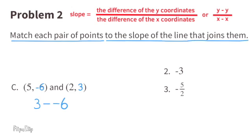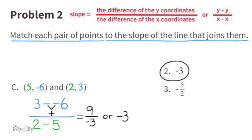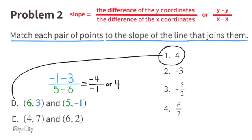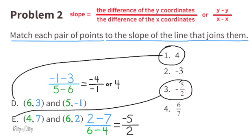C: 3 minus negative 6, which would be positive, over 2 minus 5. 3 plus 6 is 9, and 2 minus 5 is negative 3. Since 9 divided by negative 3 equals negative 3, the slope of this line equals negative 3. D: Negative 1 minus 3 over 5 minus 6. Negative 1 minus 3 equals negative 4, and 5 minus 6 equals negative 1. Negative 4 divided by negative 1 equals positive 4. The slope of this line is positive 4. E: 2 minus 7 over 6 minus 4. 2 minus 7 equals negative 5, and 6 minus 4 equals 2. The slope of this line would be negative 5 over 2.